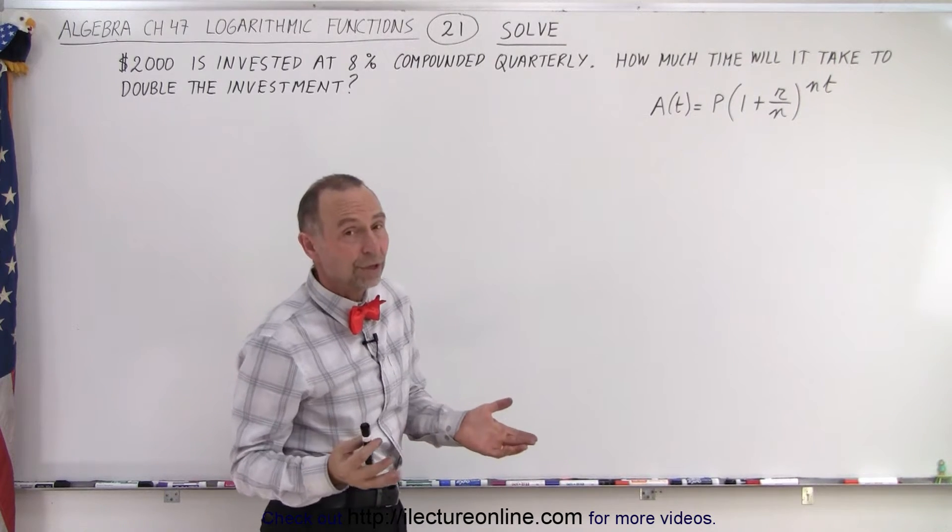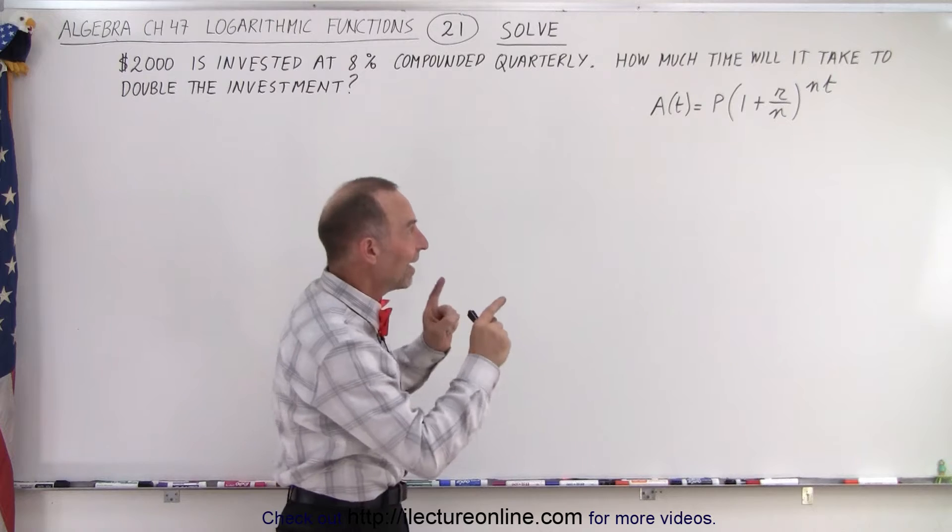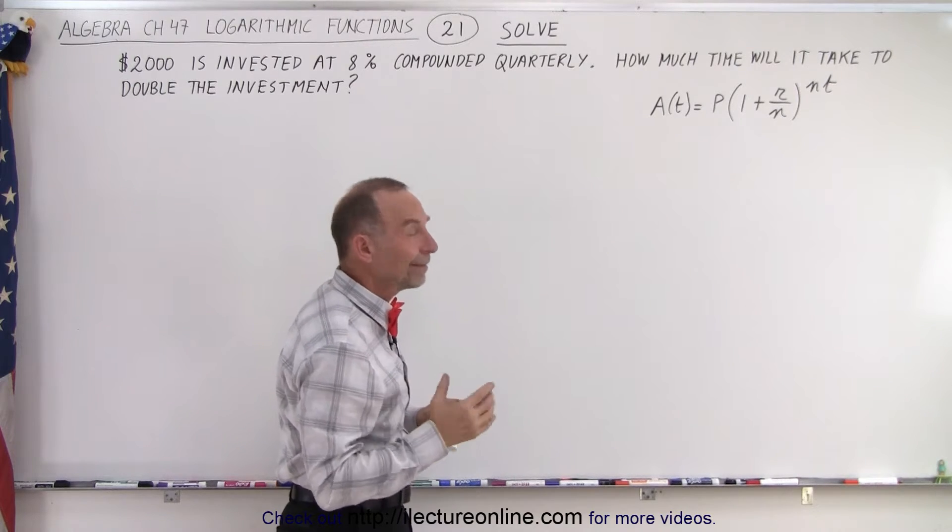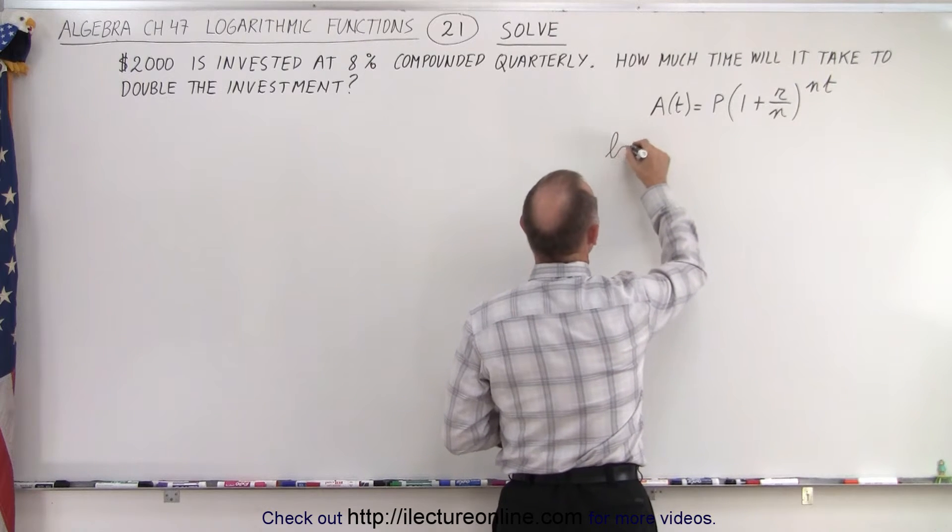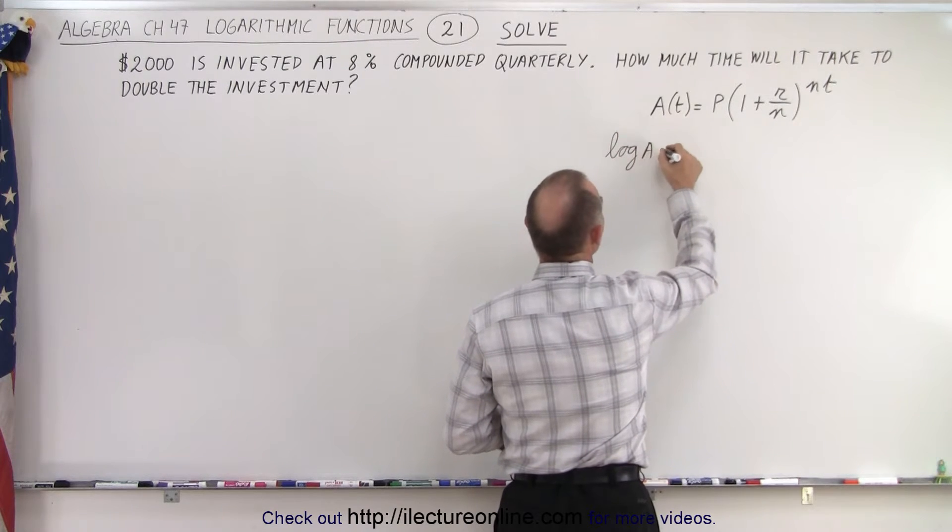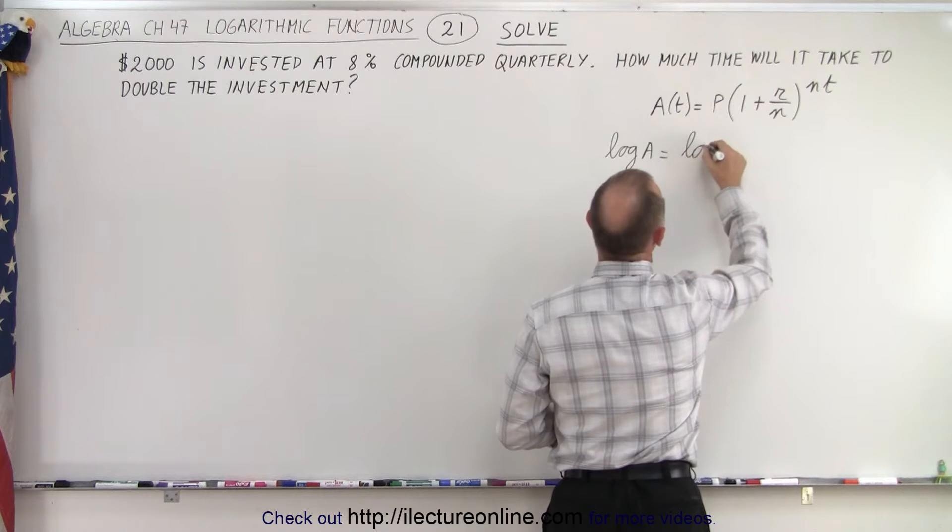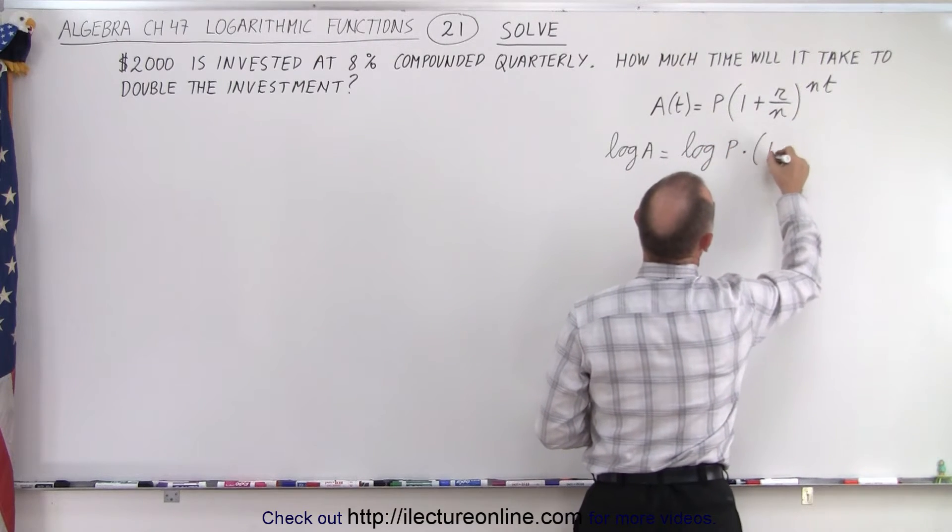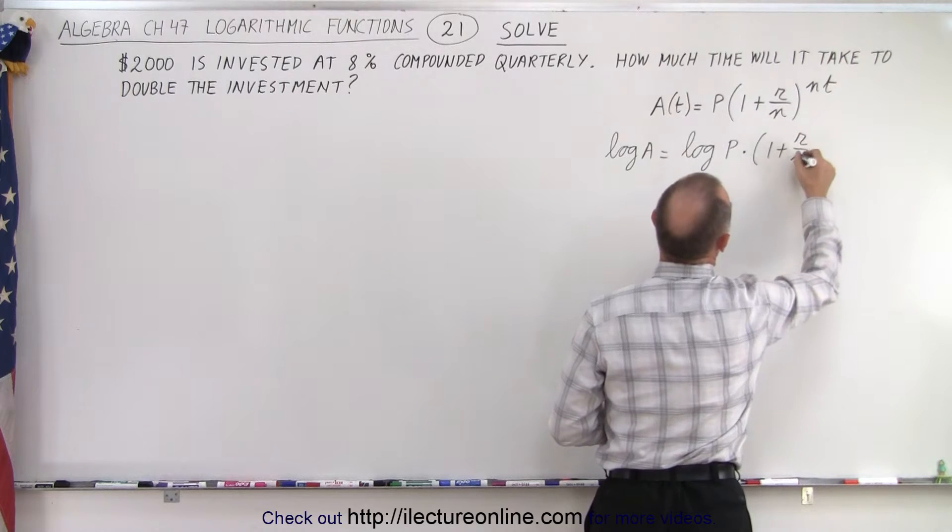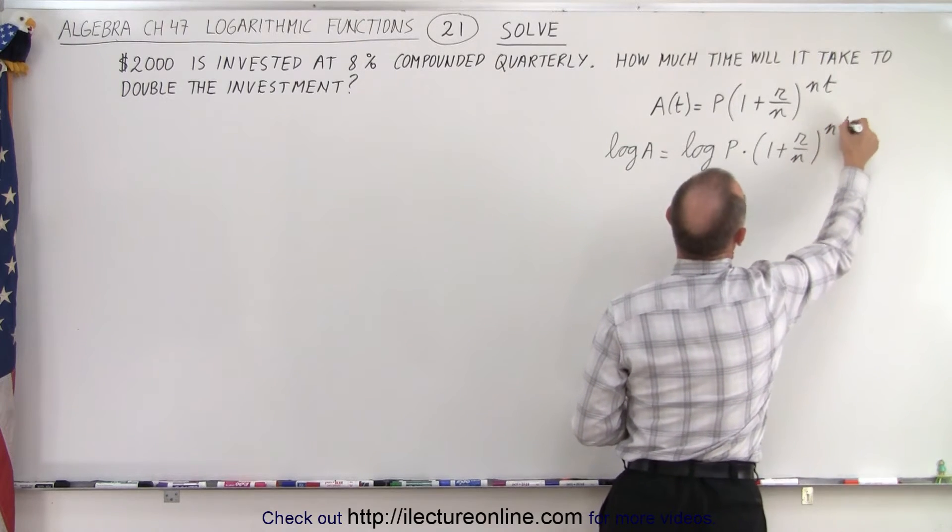So what we're going to do here is we're going to take the log of both sides and find a way to separate that t from everything else. So we take the log of the left side, so the log of A is equal to the log of P multiplied times 1 plus r over n to the nt power.